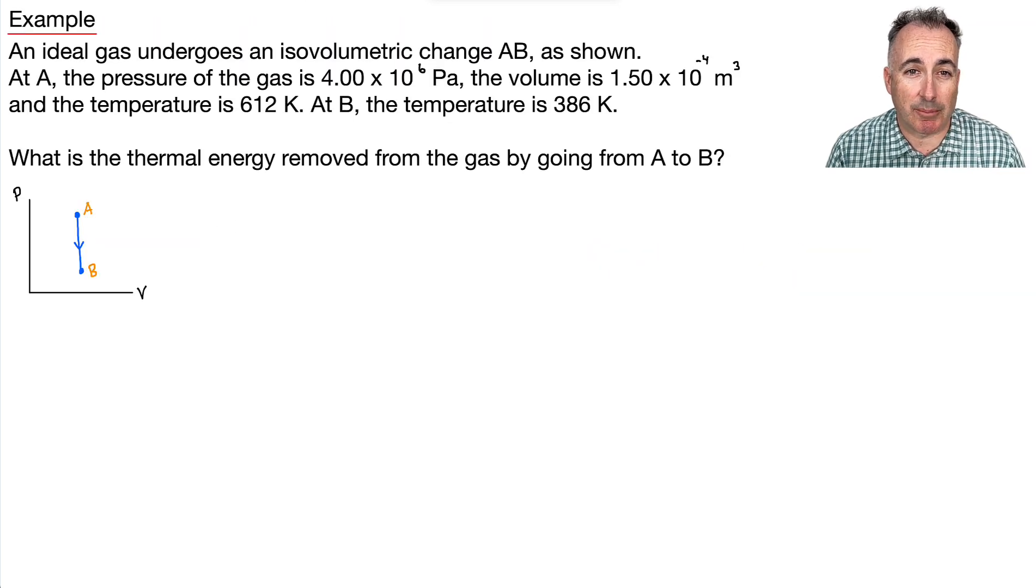So let's do an example. Here we've got an ideal gas, and it undergoes an isovolumetric change AB, as shown. Remember what isovolumetric means? It means the volume doesn't change. So here it just goes straight down in pressure, but the volume stays the same.